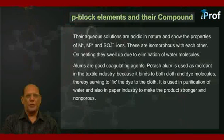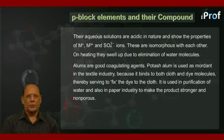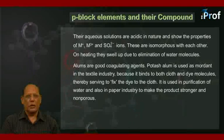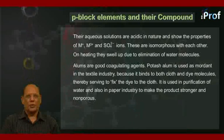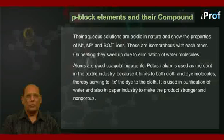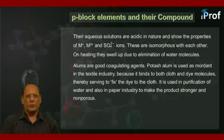Potash alum is used as mordant in the textile industry because it binds to both cloth and dye molecules, thereby serving to fix the dye to the cloth. It is used in purification of water and also in paper industry to make the product stronger and non-porous.